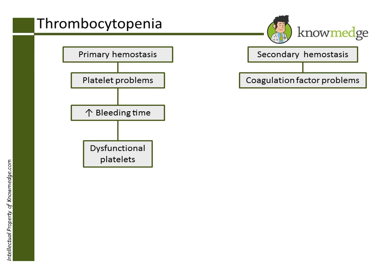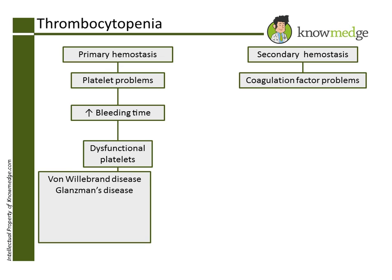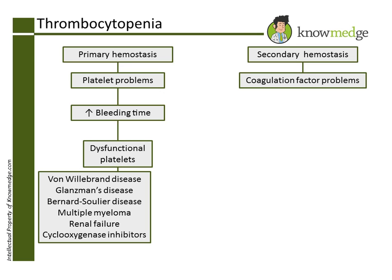Platelet disorders can be broken down into dysfunctional platelets and a decreased number of platelets causing thrombocytopenia. Some of the causes of dysfunctional platelets are von Willebrand disease, Glanzmann's disease, Bernard-Soulier disease, multiple myeloma, renal failure, and cyclooxygenase inhibitors. This means that choices A, B, D, and E are all due to dysfunctional platelets.